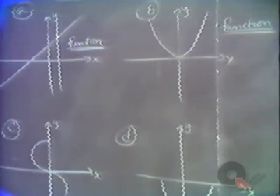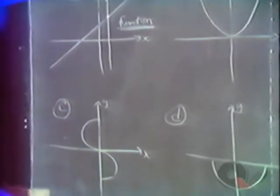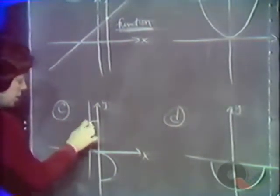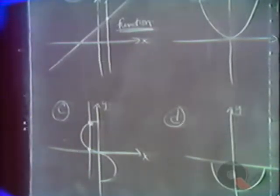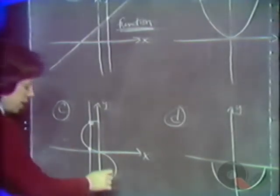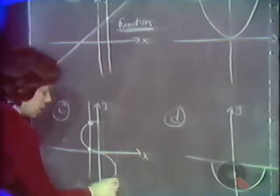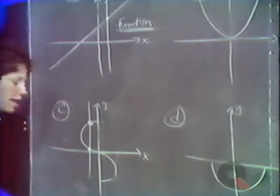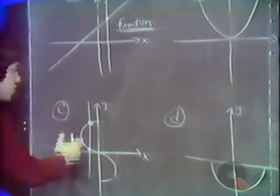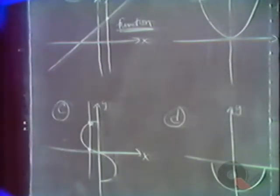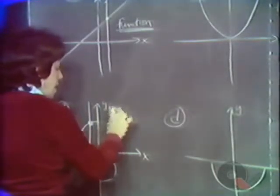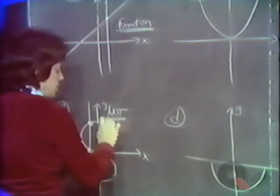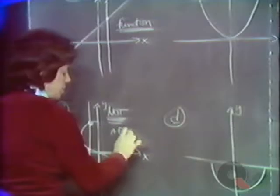In C, however, a vertical line crosses the graph twice, so it is not a function. It doesn't matter that over in some region you might be able to draw a vertical line that crosses it exactly once — once there is even one vertical line that crosses it twice, it's not a function.